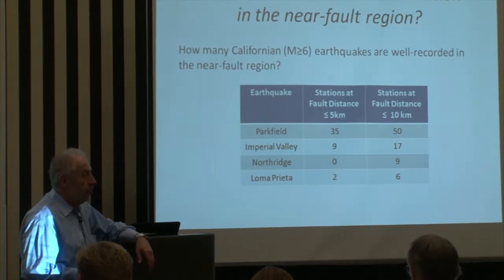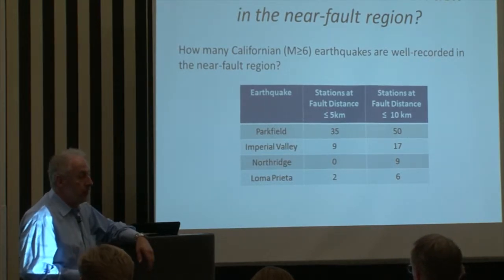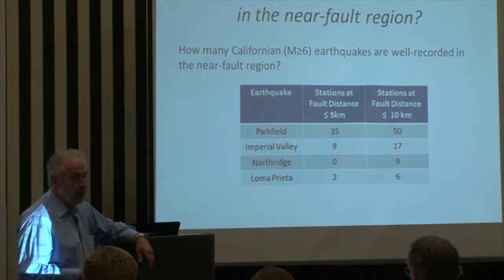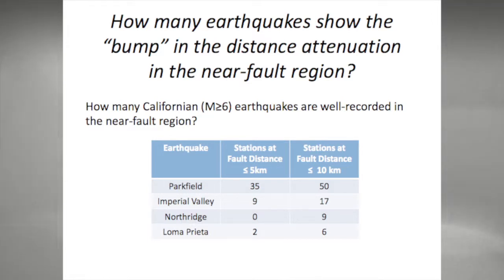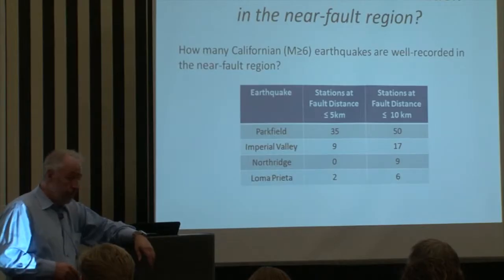I will come to the speculations on how we explain this, but let's start with real data. As far as I know, there are four well-recorded near-field earthquakes in California: Parkfield, Imperial Valley, Northridge, and Loma Prieta.